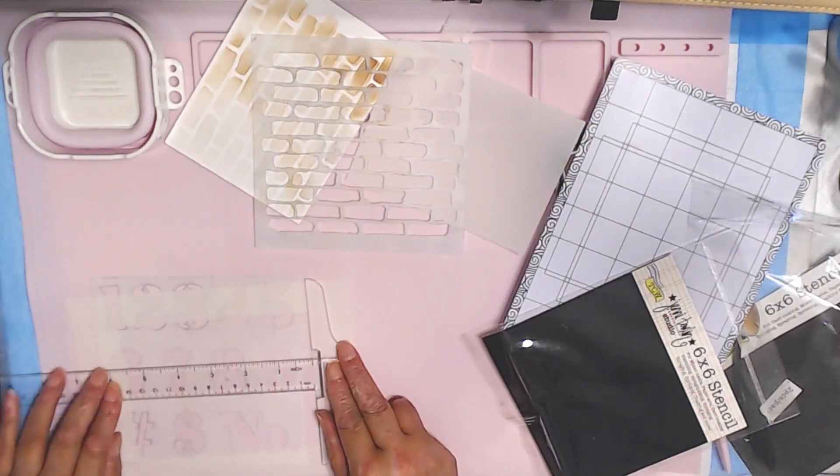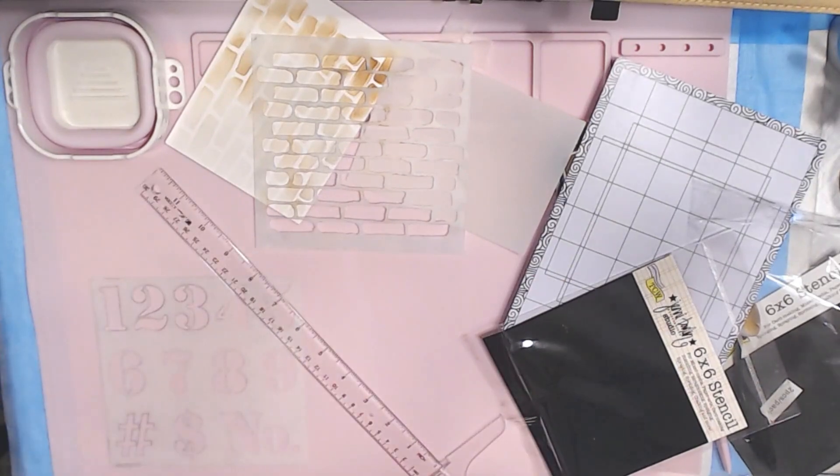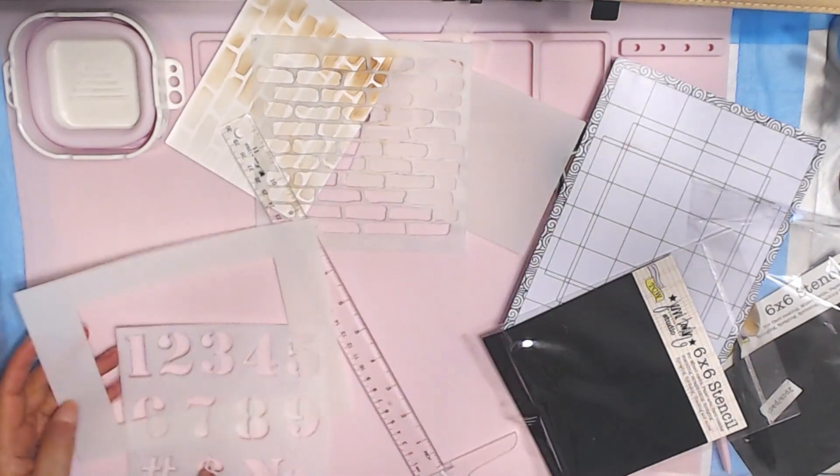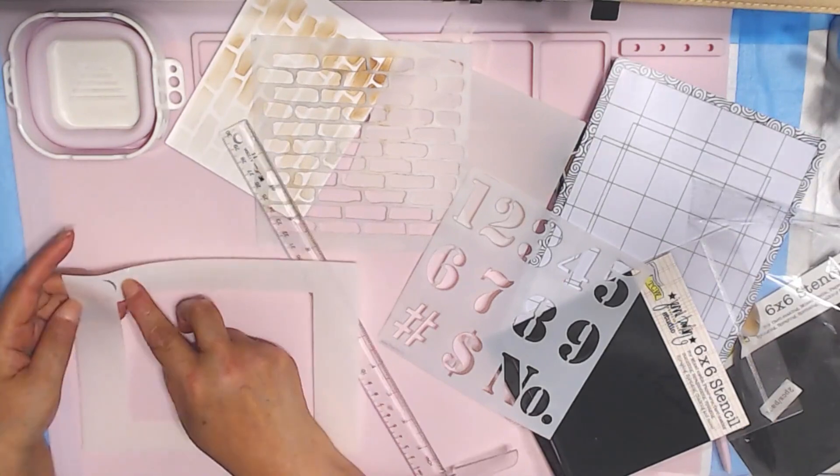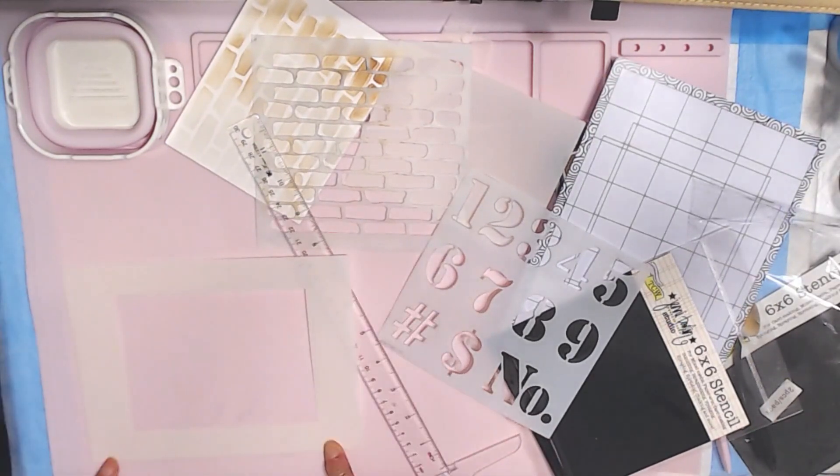This opening on here is 5½, and this is just 4. You can look at this and tell that this is a rectangle, and this is a square. And since the tabs are right here, it's really not going to hold a 6x6 stencil.